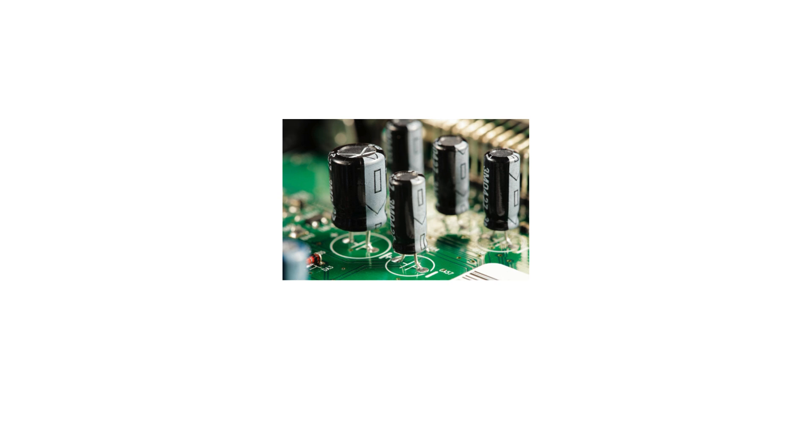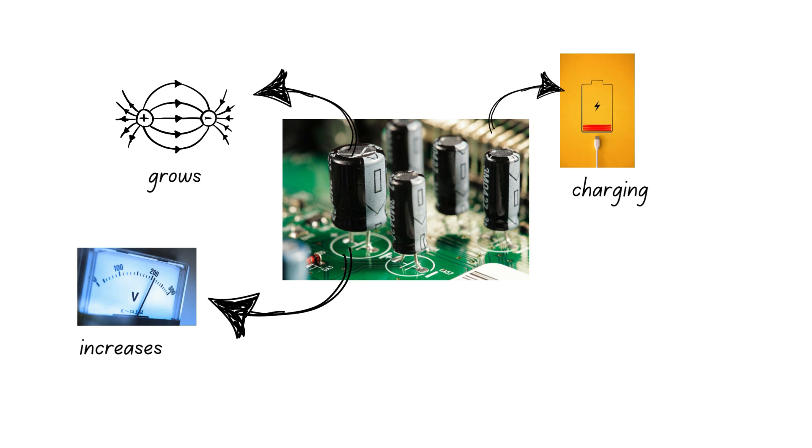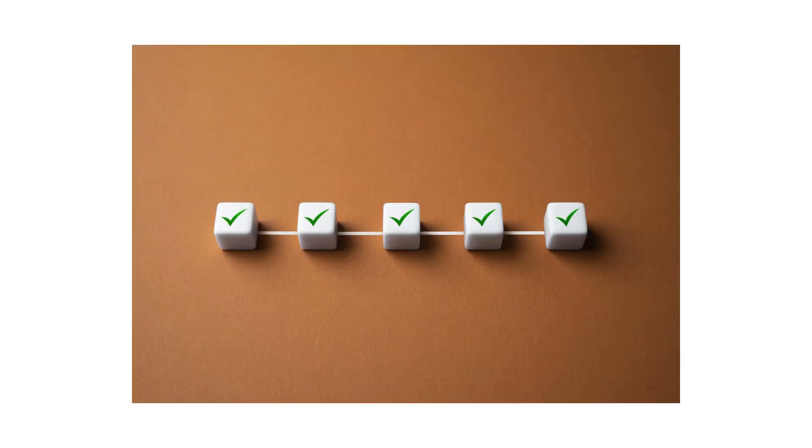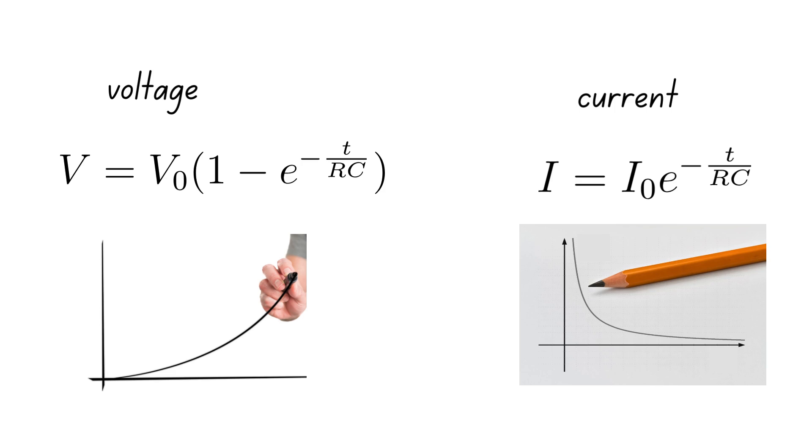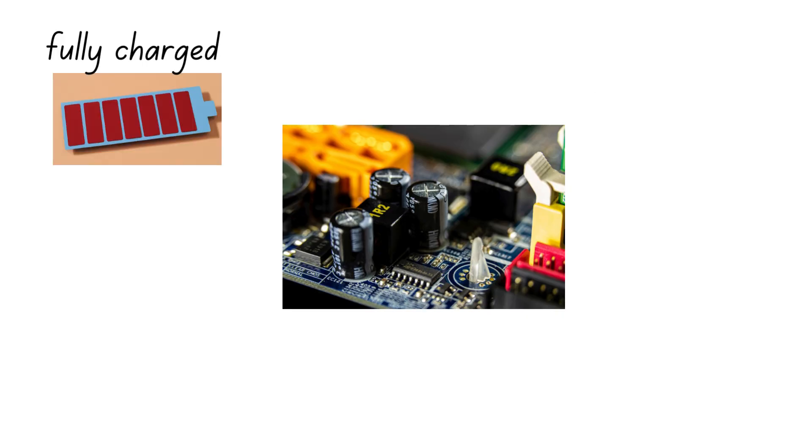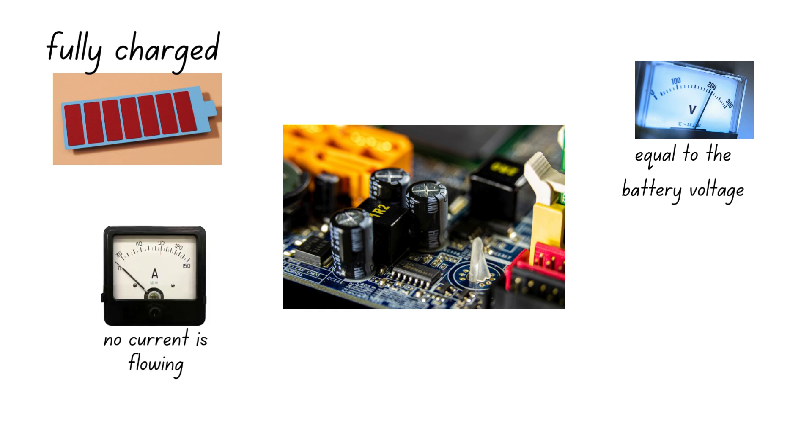As the capacitor continues to charge up, the electric field between its plates grows, the voltage across it increases and the current flowing in the circuit decreases. Under ideal conditions, the increase in voltage and decrease in current are exponential. When the capacitor is fully charged, the voltage across it is equal to the voltage of the power supply and current through the circuit is virtually zero.